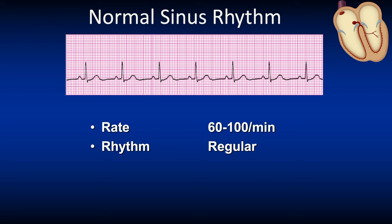The rhythm is regular, meaning the R-to-R distances or intervals are constant as what we see here. Look at the R-to-R distances — the length stays the same, meaning the rhythm is constant. There are P waves present and we can see one positive or upright P wave in lead 2 for every QRS and vice versa, meaning one-to-one conduction — one P wave per QRS.